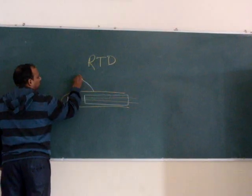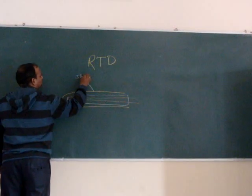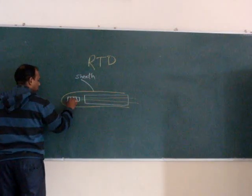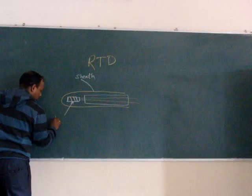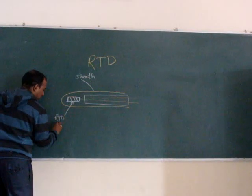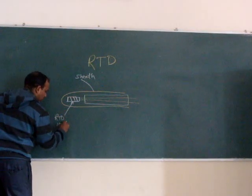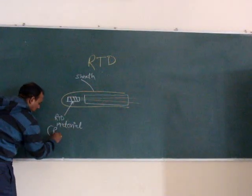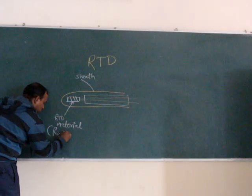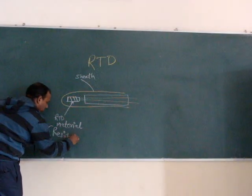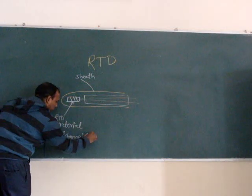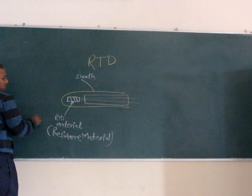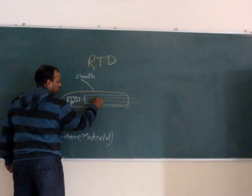This is sheath. This is RTD material. We can say resistance material. And these are clips.